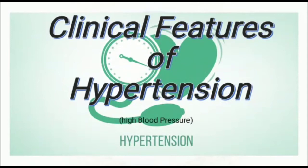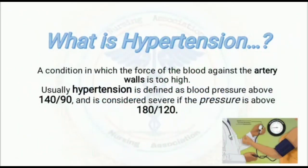First of all, what is hypertension? It is a condition in which the force of the blood against the arterial wall is too high. This condition is seen when the arterial walls experience blood pressure at a very high level. Usually hypertension is defined as blood pressure above 140 by 90 mmHg.